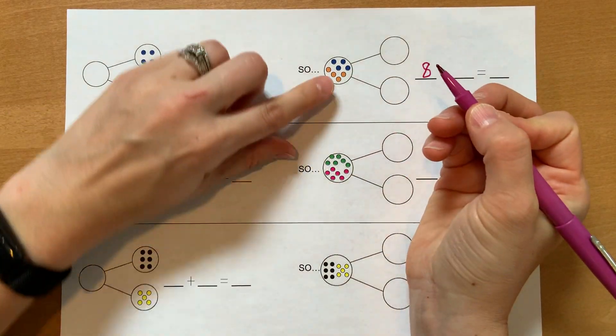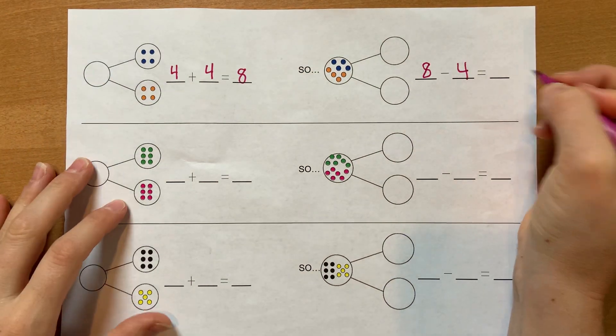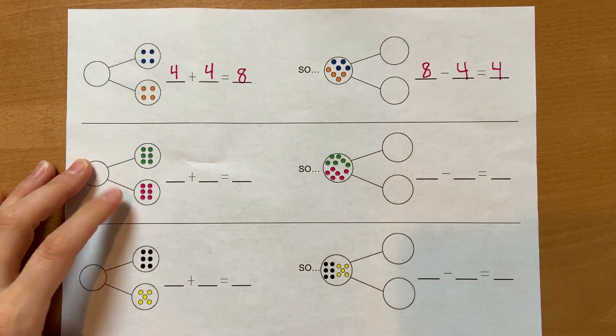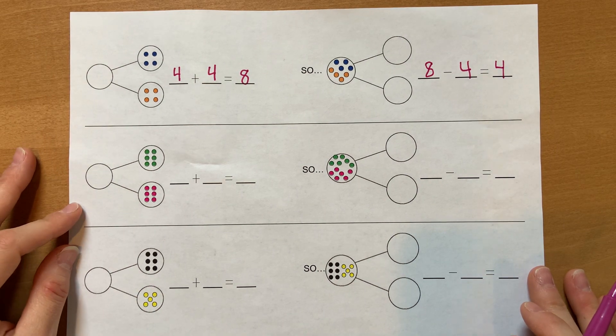I have eight, and if I take away four, if I take away four, how many are left? Four. Addition helps me with subtraction. Let's go on to the next one.